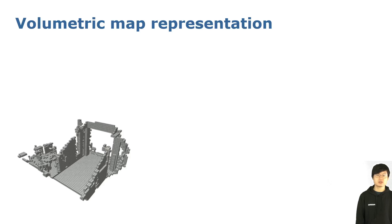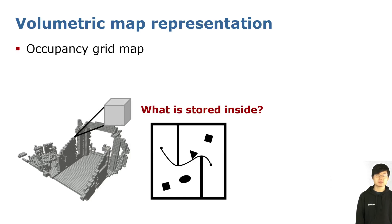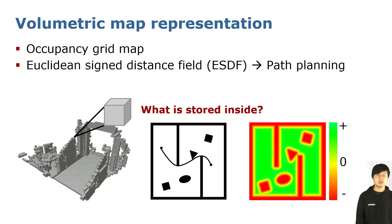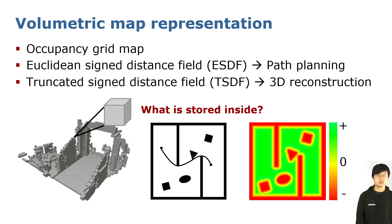As for the first question, we use the volumetric map which discretizes the 3D space into voxels. Depending on what is stored in each voxel, we have different types of maps. Occupancy maps store the occupancy probability, while the Euclidean Signed Distance Field (ESDF) stores the Euclidean distance to the closest surface. Unfortunately, ESDF cannot be built directly from sparse observations. The workaround is to use the easy-to-integrate Truncated Signed Distance Field (TSDF) as an approximation. TSDF is enough for surface 3D reconstruction, but for trajectory optimization-based path planning, we need to go a step further to ESDF.